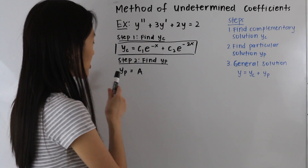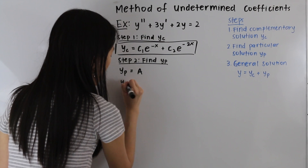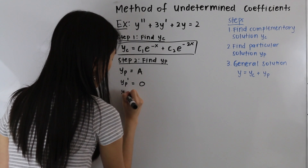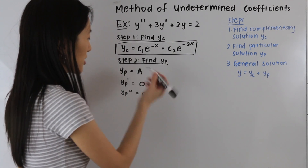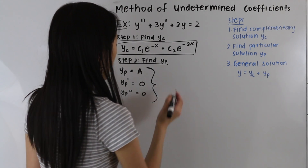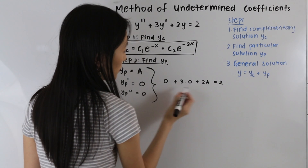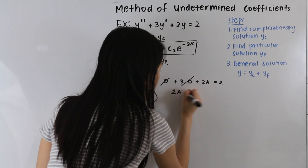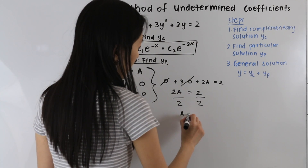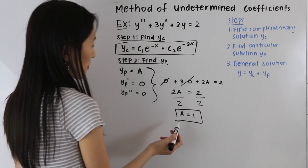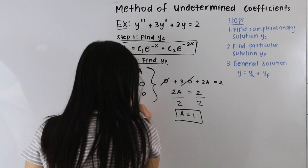From here, we differentiate yp two times and plug it into our differential equation to solve for A. Taking the first derivative, yp prime is equal to 0, and yp double prime is equal to 0 as well. Plugging yp, yp prime, and yp double prime into our differential equation, we get 0 plus 3 times 0 plus 2a is equal to 2. These cancel out, leaving us with 2a is equal to 2. Dividing both sides by 2, we get a is equal to 1.